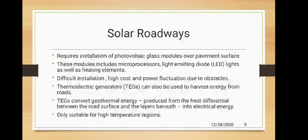Solar roadways require installation of photovoltaic glass modules over pavement surfaces. These modules include microprocessors, light-emitting diodes, as well as heating elements. Microprocessors and LEDs are generally used for night lights, and microprocessors are used for transmitting processed data. The heating elements are used in countries with very cold atmospheres where snowfall occurs, like countries in Siberia and the Northern Hemisphere.